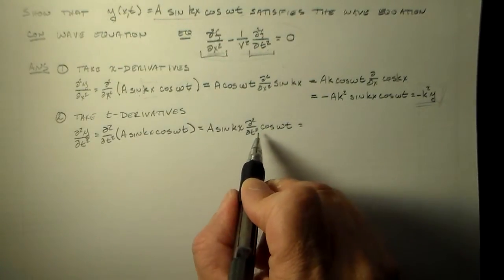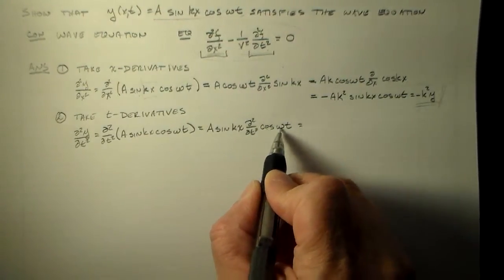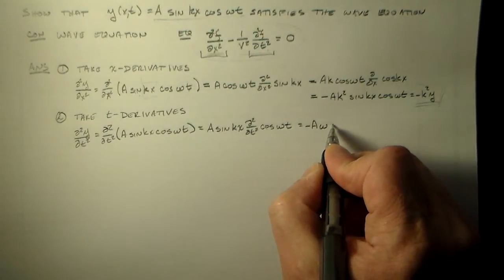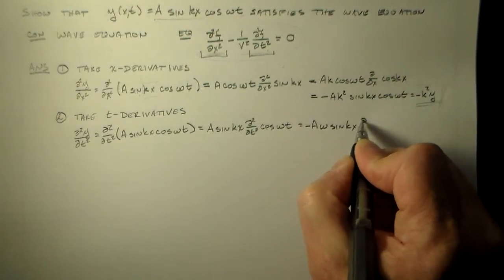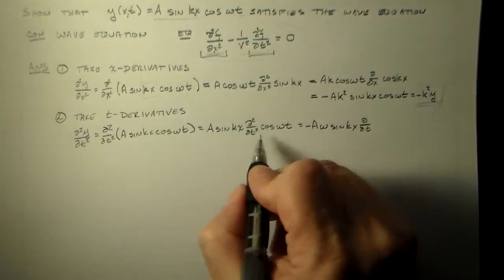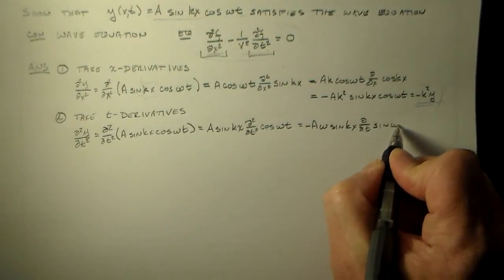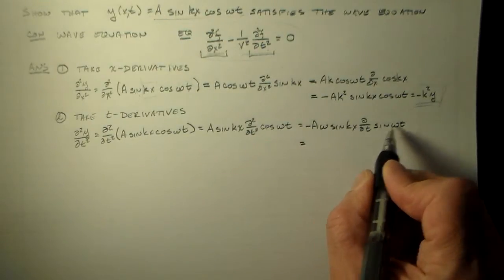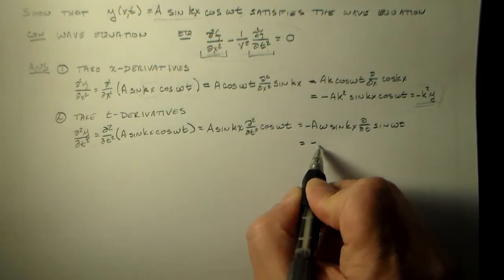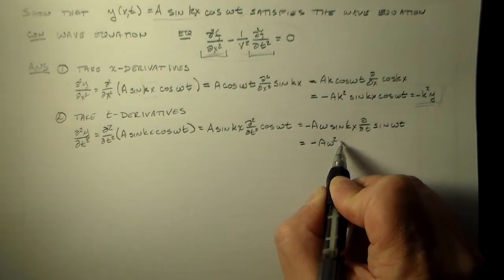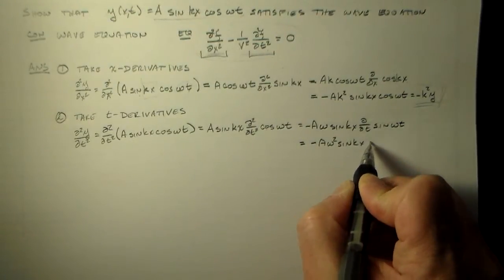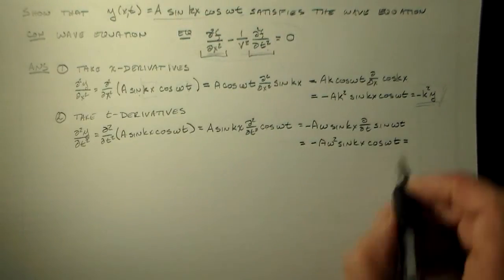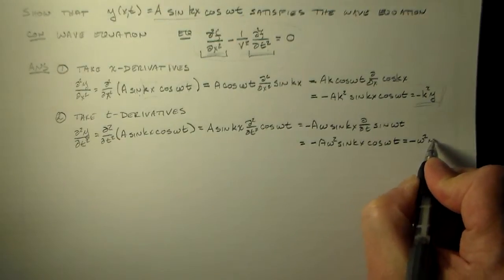The derivative of cosine omega t is minus omega sine omega t. So we have minus a sine kx d dt sine omega t. We take this derivative, that's omega cosine omega t. So we have minus a omega squared, sine kx cosine omega t, which is equal to minus omega squared this time, times y.